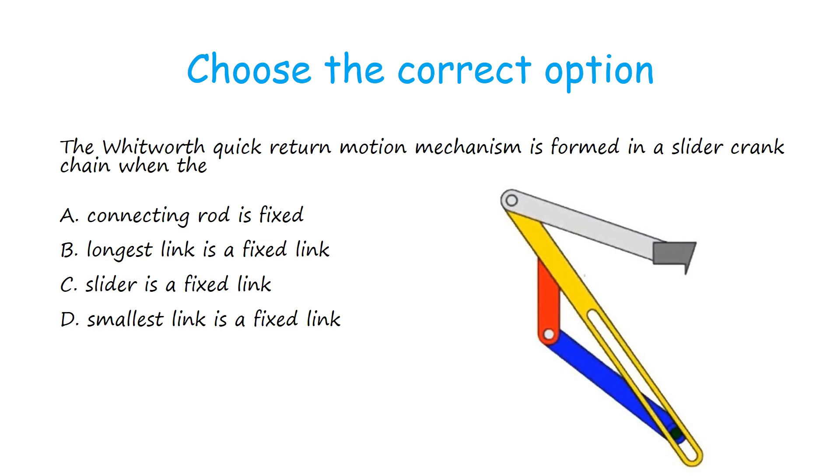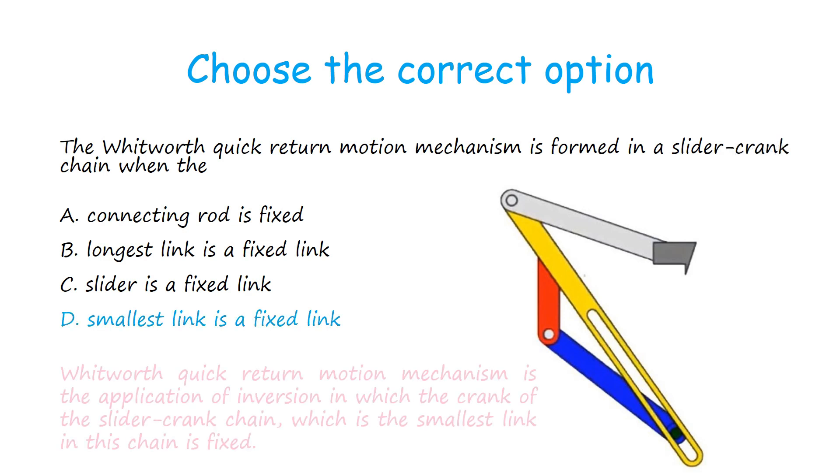Let's discuss the answer. The correct option is D. Whitworth quick return motion mechanism is the application of inversion in which the crank of the slider crank chain, which is the smallest link in this chain, is fixed.